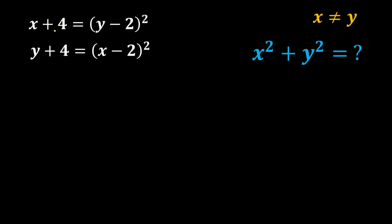Hello students. In this video we are going to solve: x plus 4 equals (y minus 2) squared, and y plus 4 equals (x minus 2) squared. We will find the value of x squared plus y squared, where x is not equal to y.